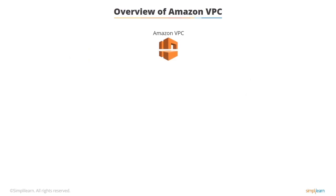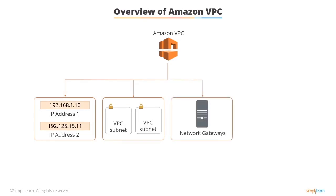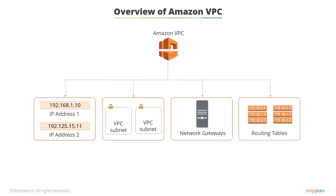With Amazon VPC you can select from a range of IP addresses, create subnets, and configure network gateways and routing tables. It also gives you the power to customize the network configuration. For example, you can place back-end systems such as database servers in a private subnet and web servers in the public subnet for connecting to the internet.